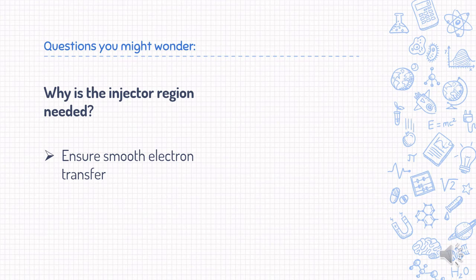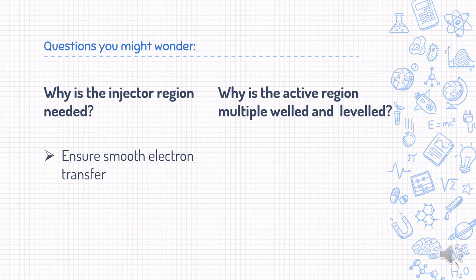Second question, why is the active region multiple weld and leveled? The main reason is to encourage population inversion, which is when higher energy population is larger than the lower energy population. In the active region, from level 2 to 1, electrons tunnel very fast due to non-radiative process. So level 2 tends to be unoccupied, triggering population inversion and radiative response between level 3 and 2.